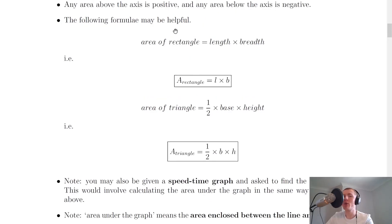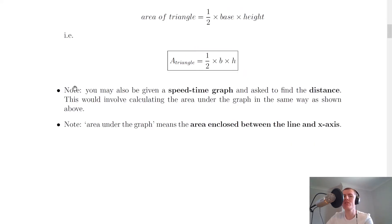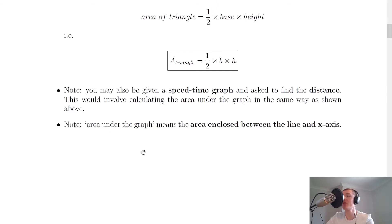Useful formulae: area of a rectangle is length times breadth, and area of a triangle is one-half times base times height. Note that you may also be given a speed-time graph instead of a velocity-time graph and asked to find distance instead of displacement — the method is identical, just using speed and distance rather than velocity and displacement. The area under the graph means the area enclosed between the line and the x-axis.